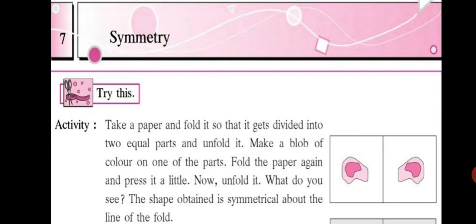What do you see? You will see some design formed on both sides of the fold. The shape obtained is symmetrical about the line of the fold. You will see that the shape obtained on both sides of the fold, on left and right side, is at the same distance. Such images are said to be images of symmetry, symmetrical figures.